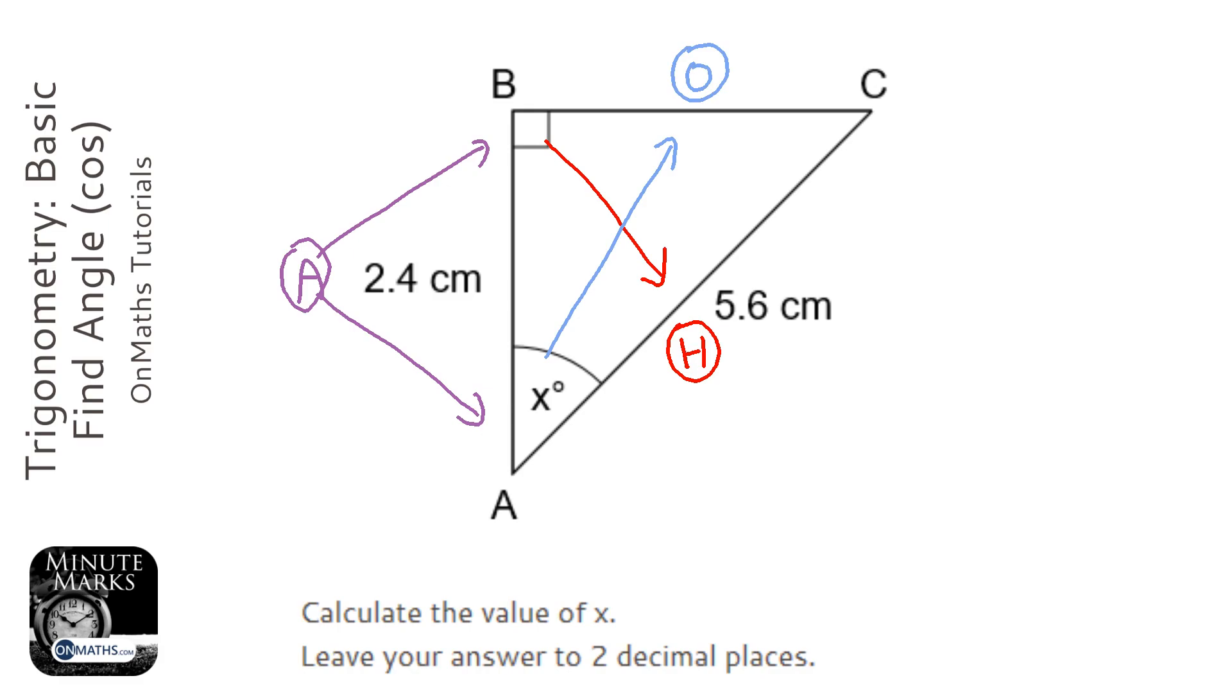Next, we cross out the one that's not interesting. The adjacent has 2.4 next to it, the hypotenuse has 5.6 next to it, so the opposite is not very interesting. We're going to write down SOHCAHTOA, and these are the three triangles we need to answer this question.